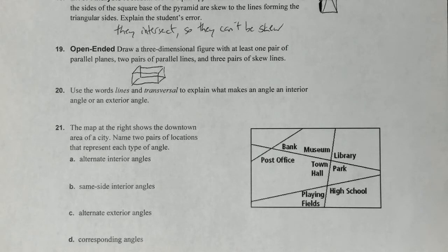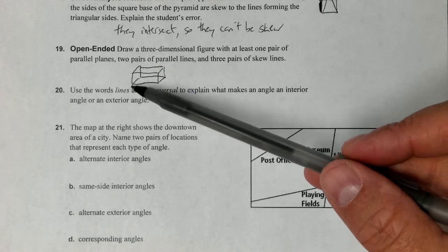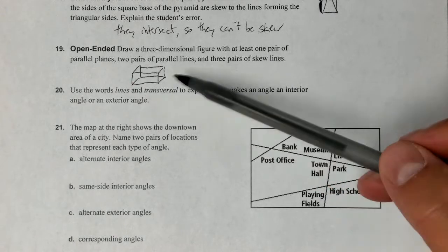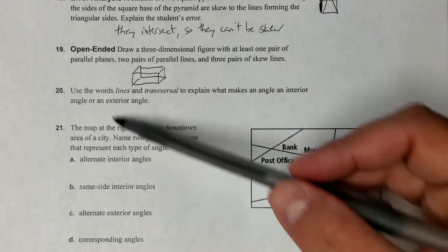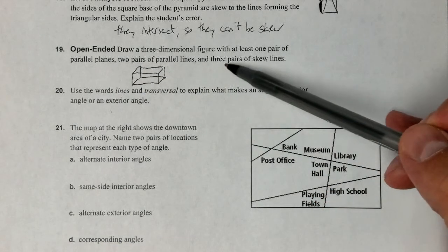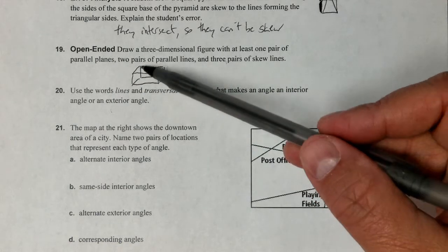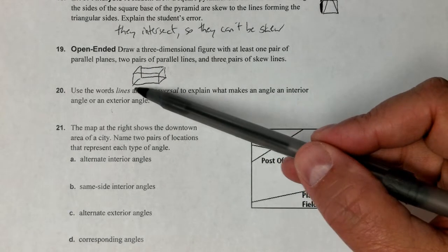I'm not going to bother marking more, but parallel planes would be the top and bottom, the left and right, the front and the back. So it's got several of those, lots of parallel lines because all the vertical ones would be.